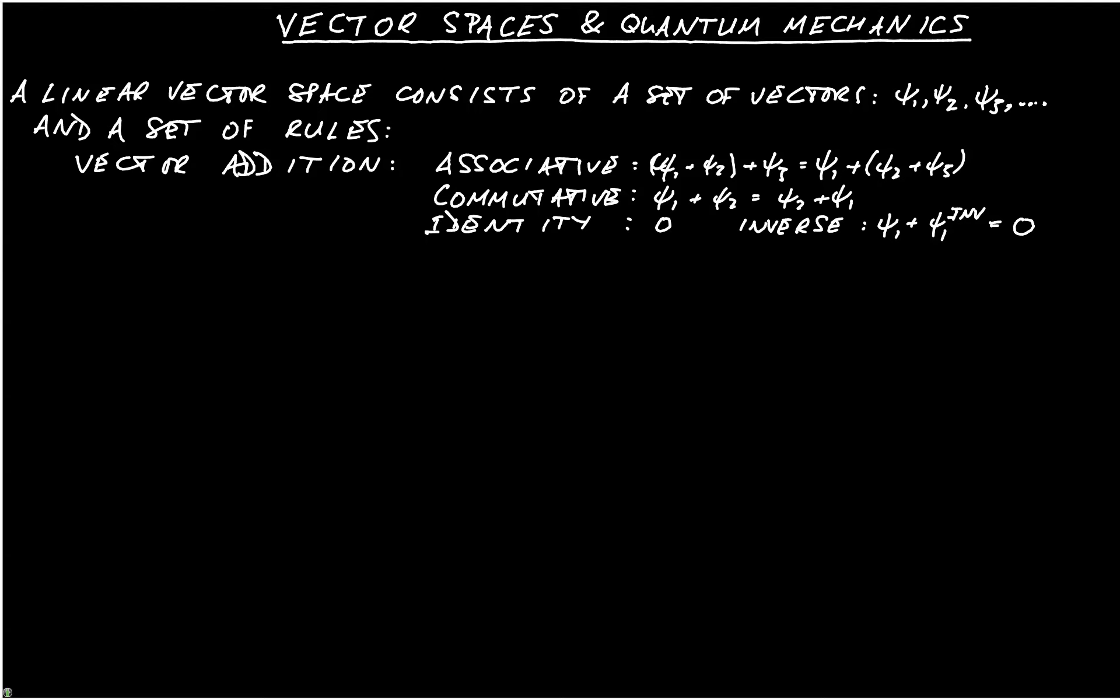We can scale each of the vectors, and the vector space has a property called closure, which effectively says that if we scale and combine the vectors, we get another vector in the space, which we can write as Psi equals A1 Psi1 plus A2 Psi2, where A1 and A2 are scalars, and Psi is also in the space. Scalar multiplication obeys the usual rules of scalar arithmetic.